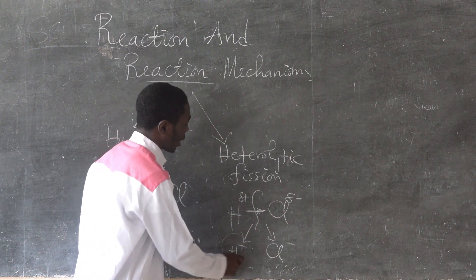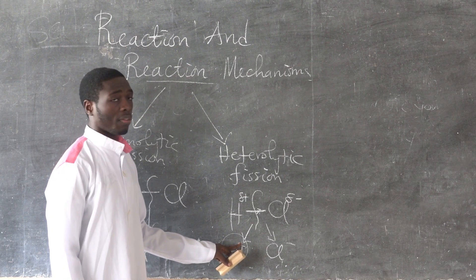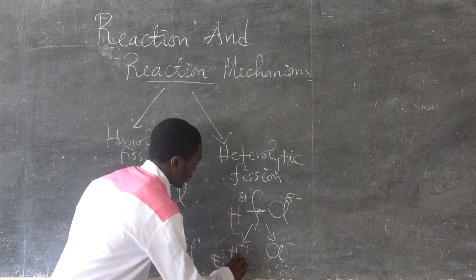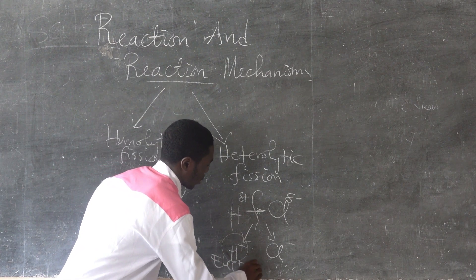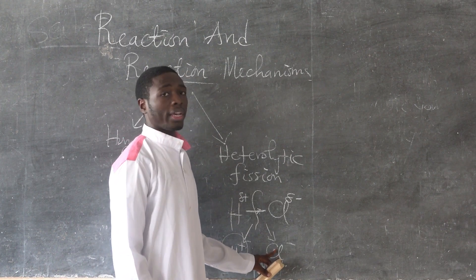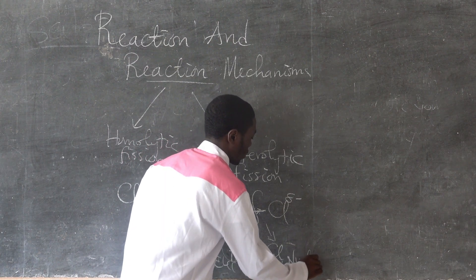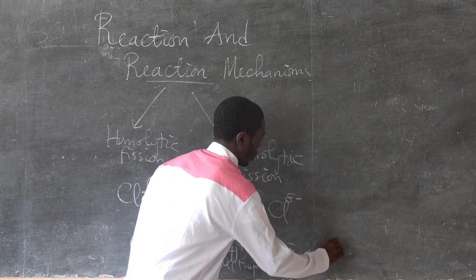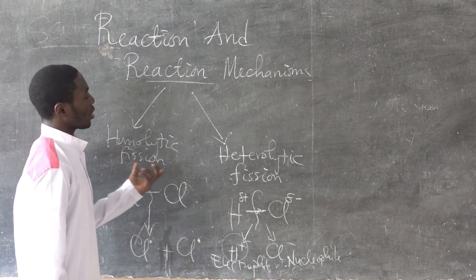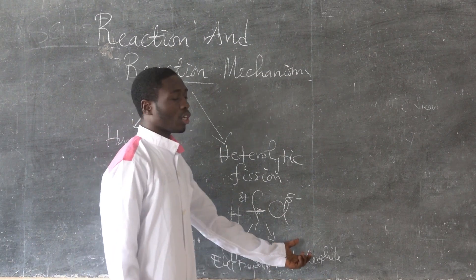This H⁺ is electron deficient, so we call it an electrophile. And Cl⁻ is a nucleophile. So radicals are produced by homolytic fission, while heterolytic fission produces electrophiles and nucleophiles.